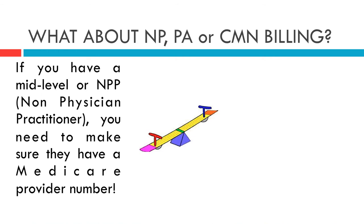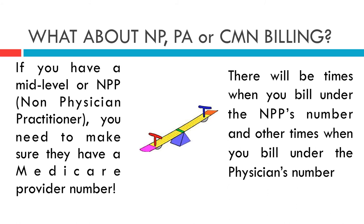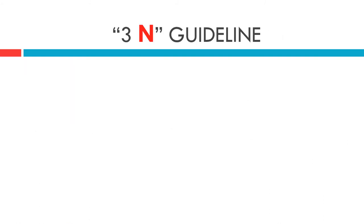Can you bill a 99211 when the patient comes in for a blood draw? That's dangerous. If all that's being done is a blood draw, code 36415 covers that. I've seen doctors get in trouble because the nurse was billing a 99211 any time they did a blood draw, or when a patient came in just to get an injection — billing 96372 and the J code — and then throwing on a 99211. You must make sure your documentation shows what you're doing and you don't bill more than what you're actually doing.